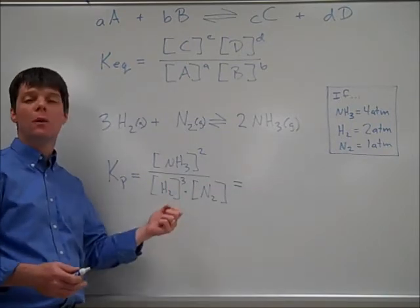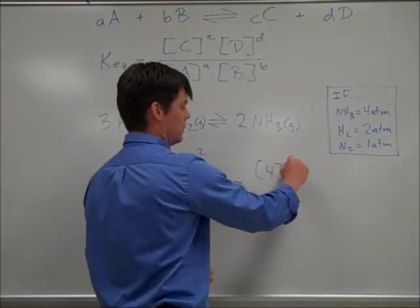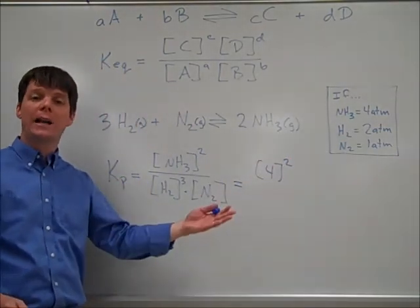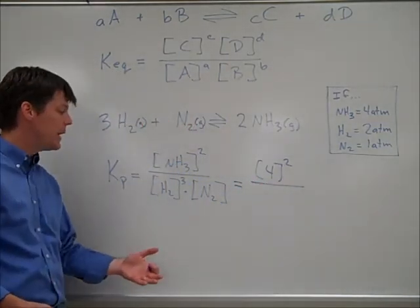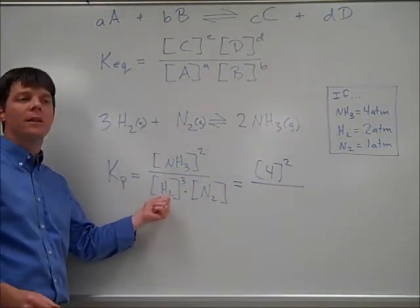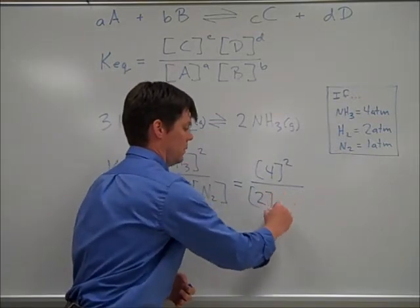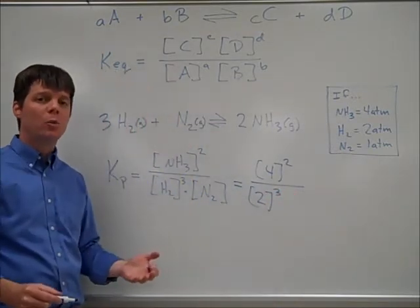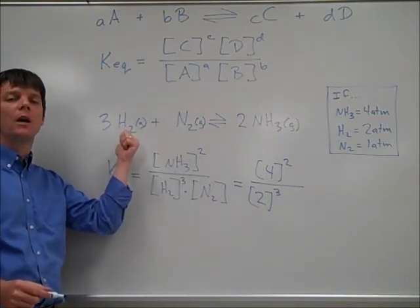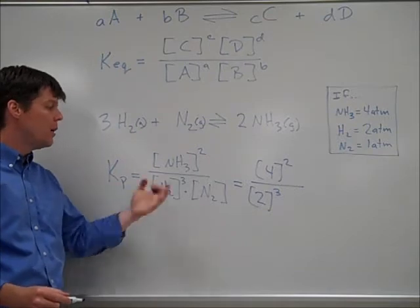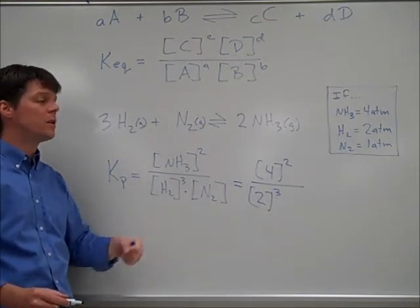I'll plug those values into my KP expression. The value for ammonia was four atmospheres, and we're going to square that. That's divided by the value for hydrogen, which was two atmospheres, and that value will be cubed — derived from the coefficient of three in the balanced equation. Finally, we multiply by the pressure of nitrogen, which is one atmosphere.